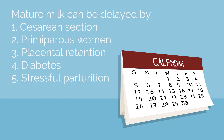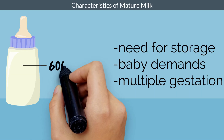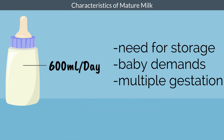Mature milk usually does not appear until at least 3 to 7 days after delivery. Mature milk secretion can be delayed by C-section, in primiparous women, placental retention, diabetes, or stressful parturition. The composition of mature milk changes daily with the age of the infant and between feeds to meet the ever-changing needs of the infant. On average, a woman makes about 600 milliliters per day, but this can be highly variable based on the infant's needs and with multiple gestations.